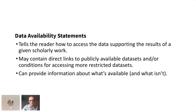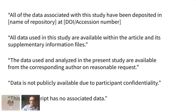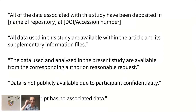Data availability statements can contain direct links to publicly available datasets or describe conditions for accessing restricted data. This information can be very useful — or so ambiguous it's not useful at all. Here are some lightly edited examples. Sometimes you get a sentence saying all the data is in a repository with a link. You'll see 'data is available upon reasonable request,' or 'we can't make data publicly available to protect patient confidentiality,' or even 'this manuscript has no associated data.'